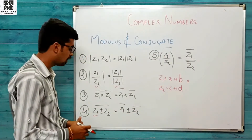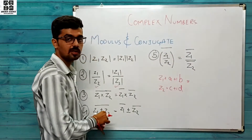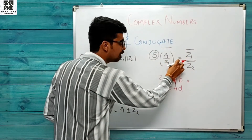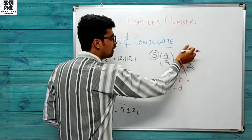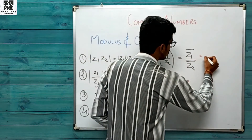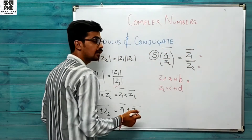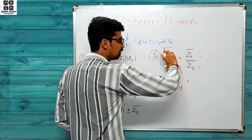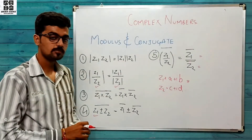Last property: agar z1 by z2 ek naya complex number banaya aur uska whole conjugate liya, that will be equal to the division of the individual conjugates of the complex numbers. Jab aap in dono ko individually divide karenge toh is naye complex number ke conjugate ke equal output milega.